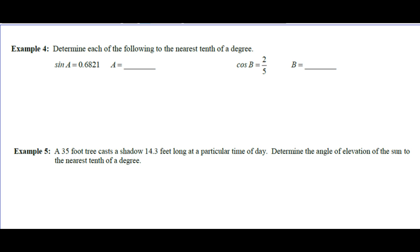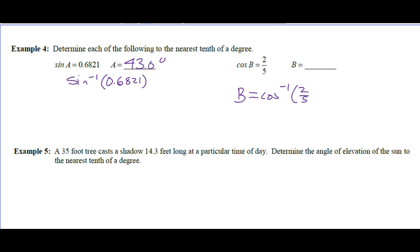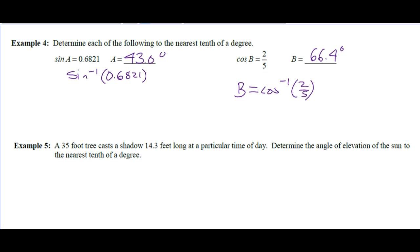Determine each of the following to the nearest tenth of a degree. Using sine inverse — 0.6821 — you plug that in, it's 43.0 degrees. The cos of B is 2 over 5, so B is the cos inverse of 2 over 5. You can just enter it that way, which is 66.4 degrees. So given a ratio, we want to find the angle — that's all that's going on.